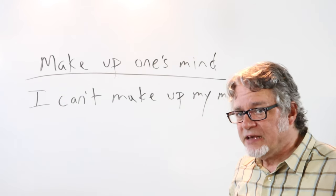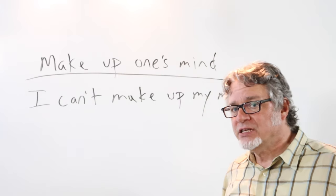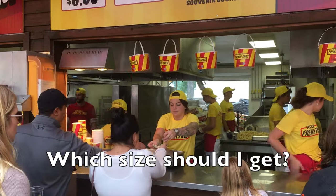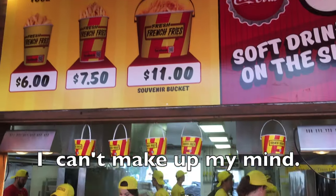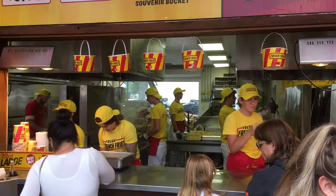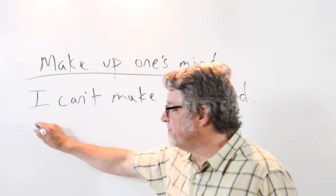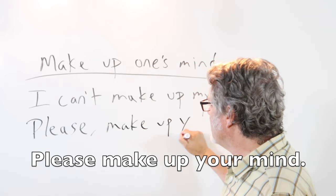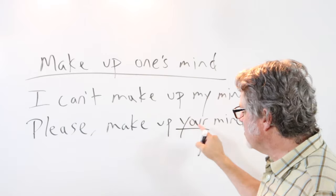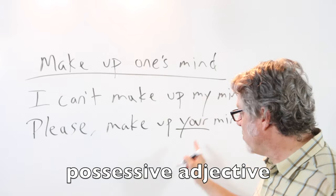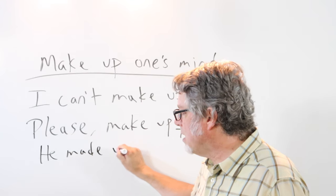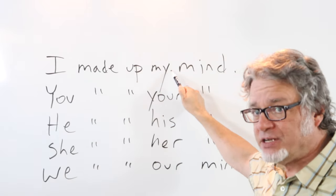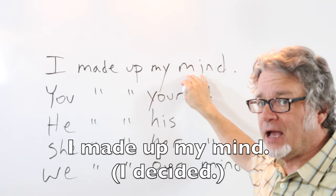'Make up' is used for a very specific reason when it comes to making decisions — a person makes up his or her mind. I can't make up my mind; which size should I get? I can't decide what to do. Or if you want somebody to make a decision, just say: please make up your mind. In this structure, you have to have a possessive adjective for the noun 'mind.' He made up his mind — make sure the subject matches the possessive adjective in front of the word 'mind.'